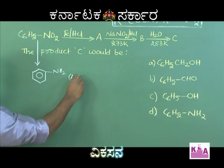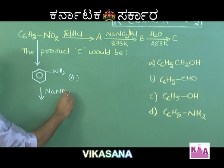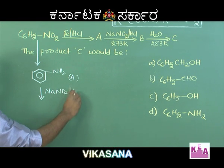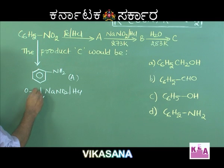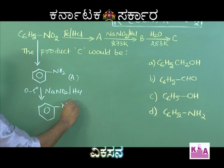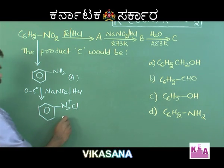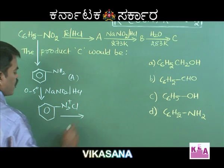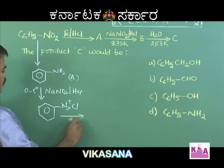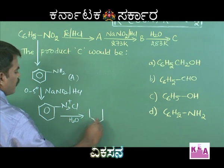Compound A (aniline) upon treating with NaNO₂ in the presence of dilute HCl between 0–5°C undergoes diazotization. Aromatic primary amines undergo diazotization to give diazonium salt — benzene diazonium chloride. This benzene diazonium chloride, upon hydrolysis by boiling with water, gives phenol.